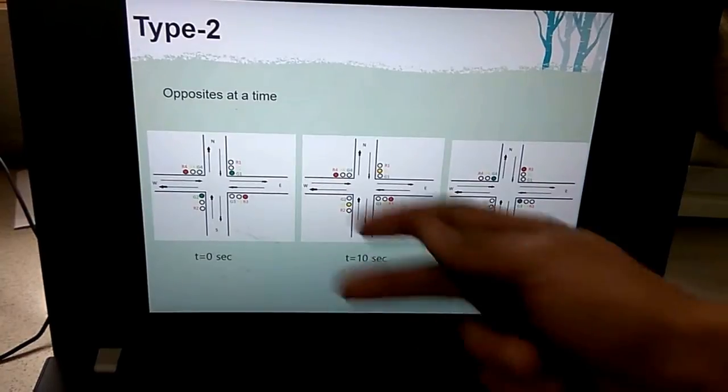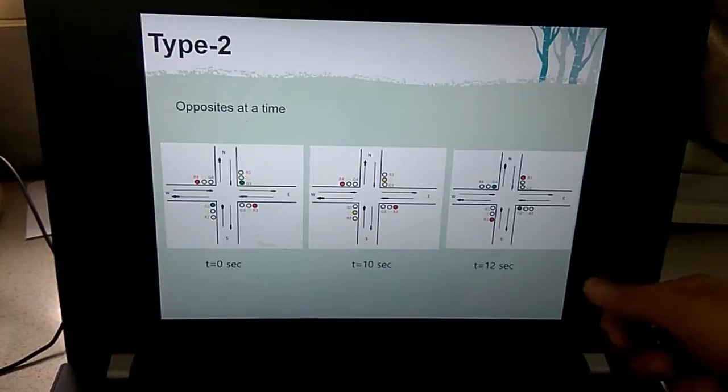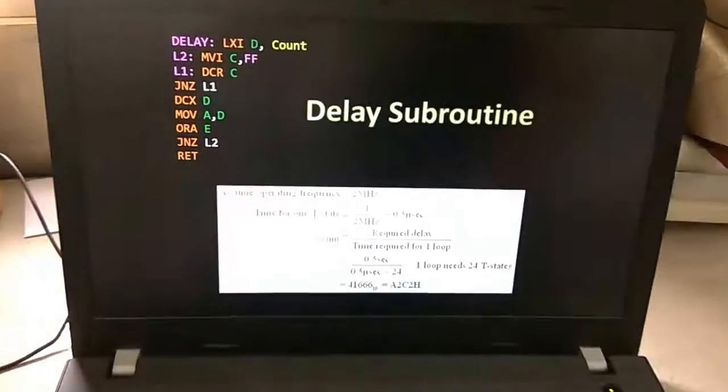After a delay, the pair of lanes will be switched and the east-west lane would be allowed to go and north-south would be made to stop. Coming to its code.